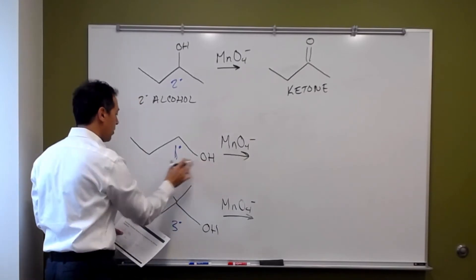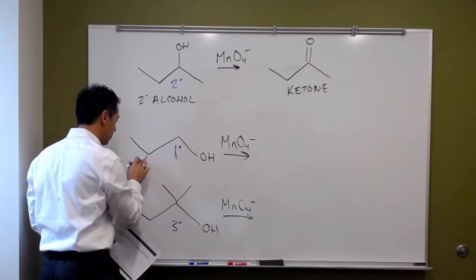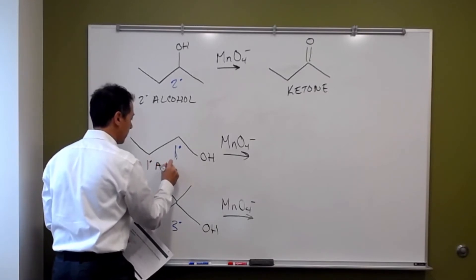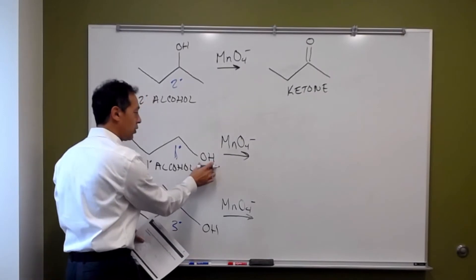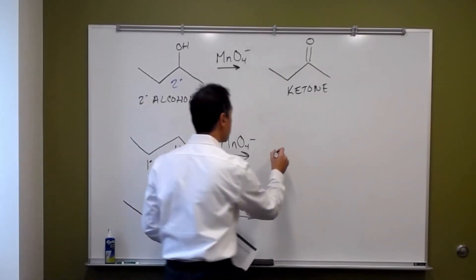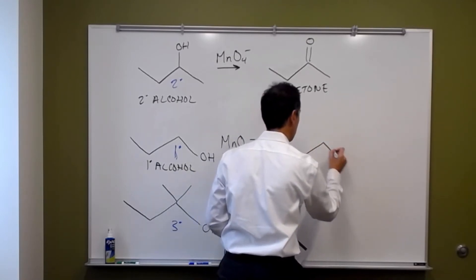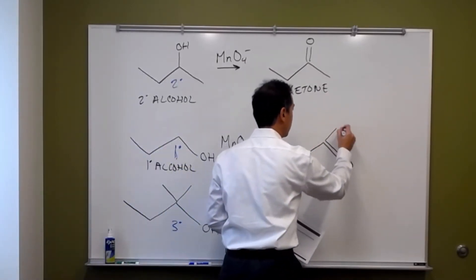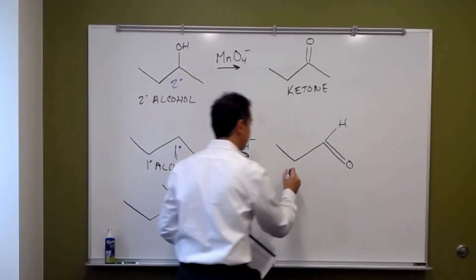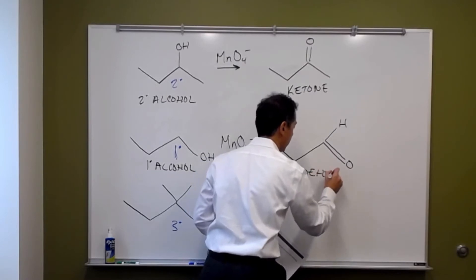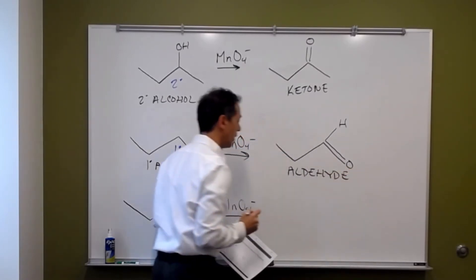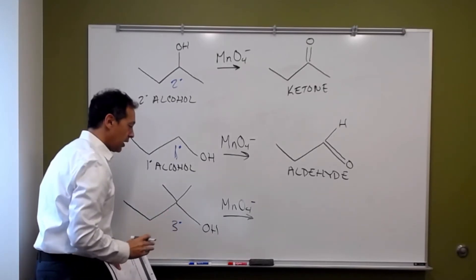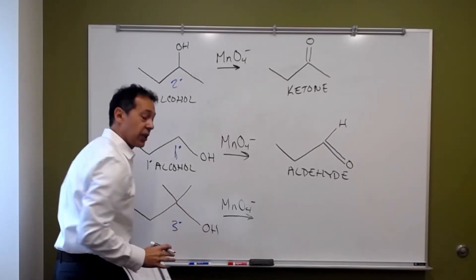For the primary alcohol, we're also going to increase the number of carbon-oxygen bonds. There will be a hydrogen here, and this becomes an aldehyde. Then, lastly, the tertiary alcohol — if we try to oxidize it, we get no reaction.